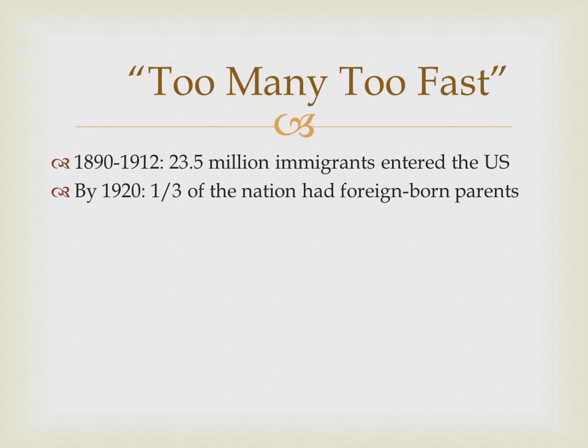There were lots and lots of people arriving. We date the new immigration from about 1880 to 1924. Between 1890 and 1912, 23 million immigrants entered the U.S. In fact, 10 million came over just between 1900 and 1910. By 1920, a third of the nation had at least one parent who was not born in this country. That is a phenomenal statistic.